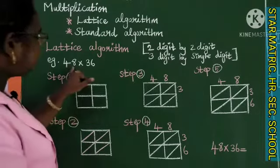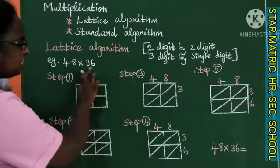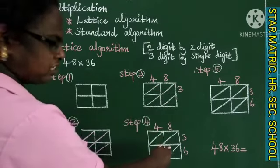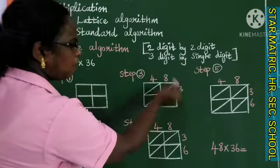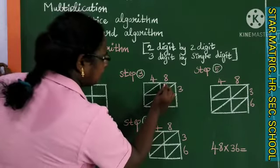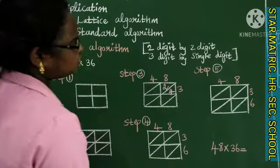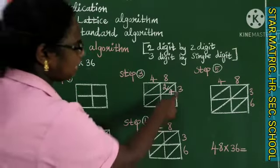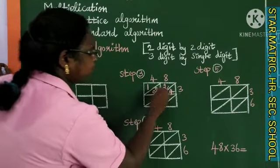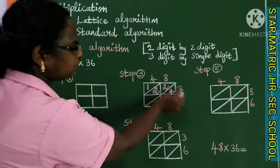Step three: we work with 48 into 36. The digits of 48 go across the top and the digits of 36 go down the side. You fill up each box with the product. 3 eights are 24, so we place 2 and 4 in the box. 4 threes are 12, so we place 1 and 2 in that box.